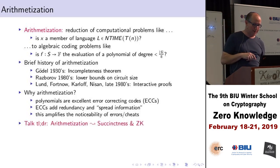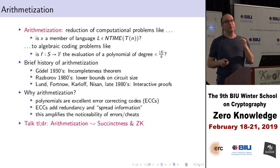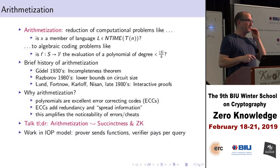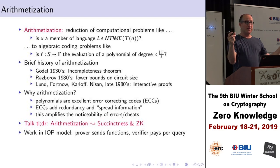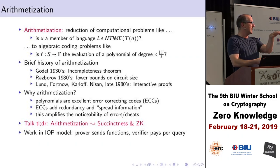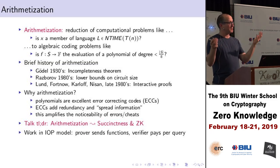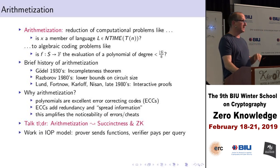The TLDR of this talk is that arithmetization — the reduction of computation to problems about polynomials — helps with succinctness and zero-knowledge. We're going to work in the IOP model: we assume we can ask a prover to give us oracle access to a certain function, then query that function at random locations, send more randomness, and ask for another oracle. We can repeat this, querying each function at random locations. The communication complexity is only the number of queries actually read from these oracles.